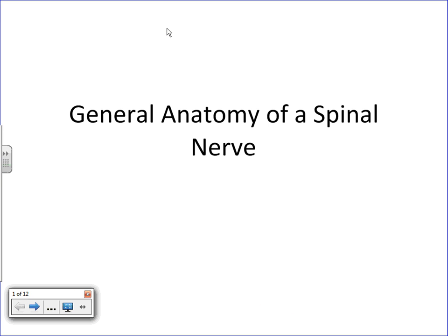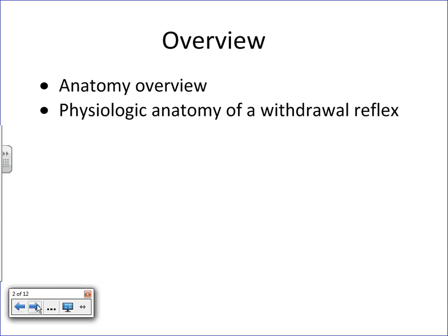In this video I'd like to spend a little bit of time talking about the very general anatomy of a spinal nerve and apply that to the basic physiologic anatomy of a withdrawal reflex. I'm not going to go over all the pathways found within the spinal cord - I'll save that for later. Having a basic understanding of the layout of the spinal cord and how nerves are structured will definitely be a big step in understanding how we get sensory input to the central nervous system and motor output out.